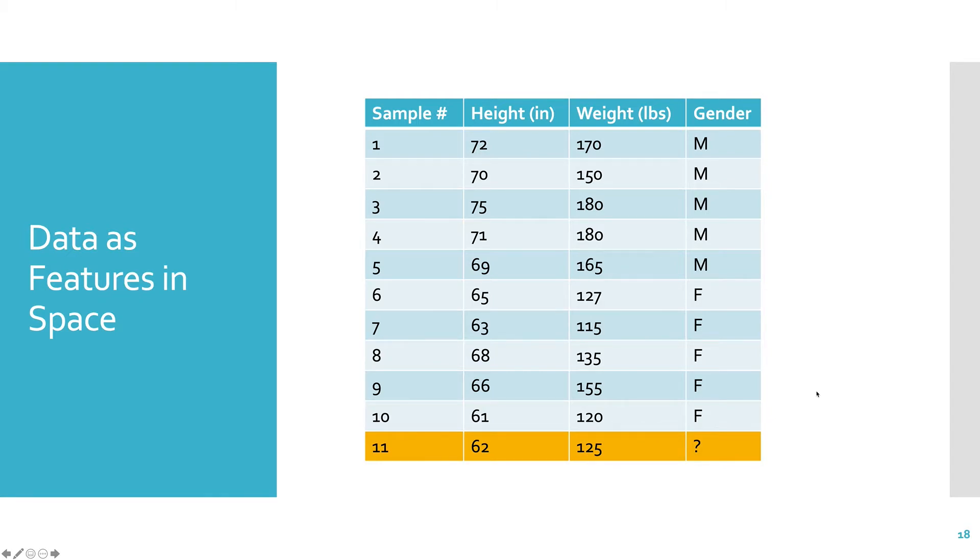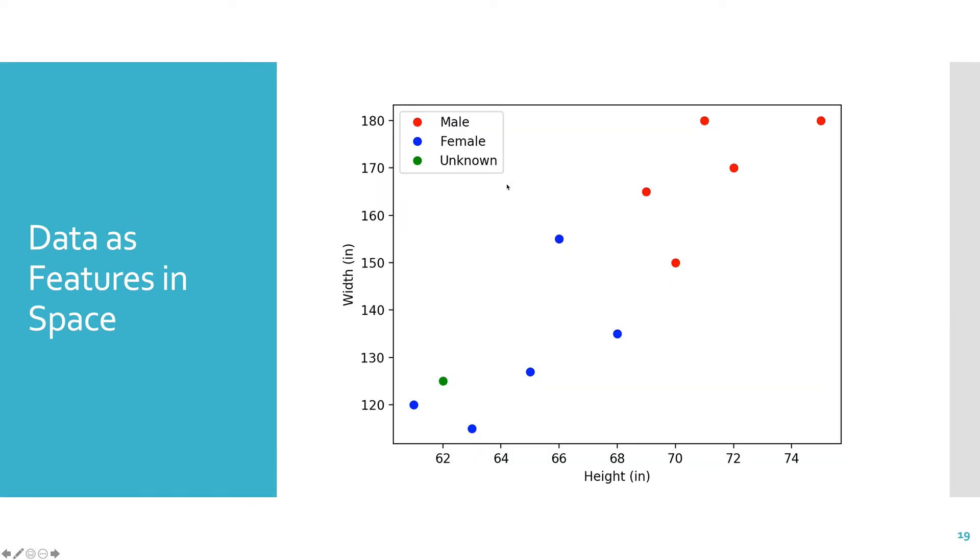Your initial reaction would probably be that it's a female, because it kind of fits along with all these other samples of females, and it's pretty far away from the weight and the height of the males. Well, this is a reasonable assumption. So if we actually take that unknown point and plot it here, it's in green. We can see it's much closer to the female samples than it is to the male samples.